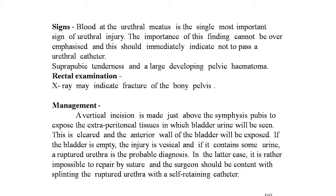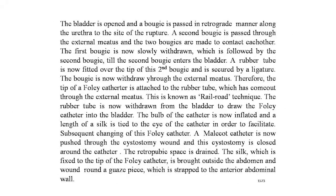Management: complete rupture diagnosis and differentiation from extraperitoneal rupture of the bladder is rather difficult. A vertical incision is made just above the symphysis pubis to expose the extraperitoneal tissues. If the bladder is empty, the injury is urethral; if it contains some urine, ruptured urethra is the probable diagnosis. In the latter case, repair by suture is rather impossible and the surgeon should be content with splinting the ruptured urethra with a self-retaining catheter.